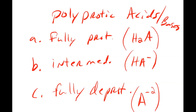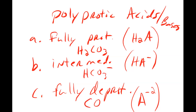A really good example of a diprotic acid would be carbonic acid, H2CO3. The bicarbonate ion HCO3⁻ is singly deprotonated — that's our intermediate — and the fully deprotonated ion is carbonate, CO3²⁻.